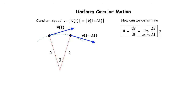Uniform circular motion is the same basic thing as the hammer throw. It's a very simple motion — that's why we study it, because it has interesting simplifications. Uniform circular motion is one in which the speed of the ball remains the same at all times. If I slow it down, that's angular acceleration. If I keep it at the same speed, this is uniform circular motion.